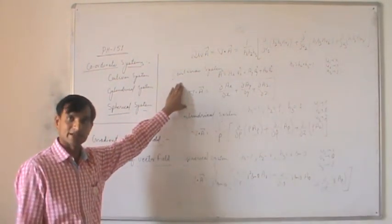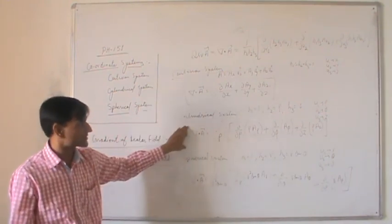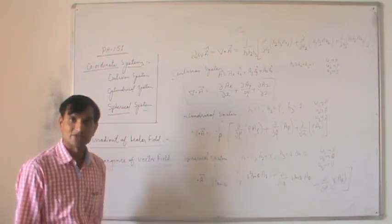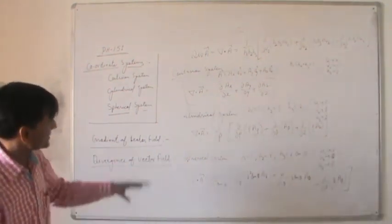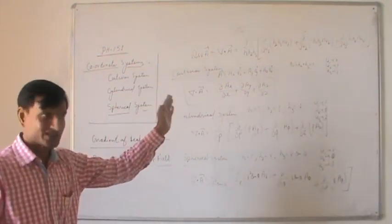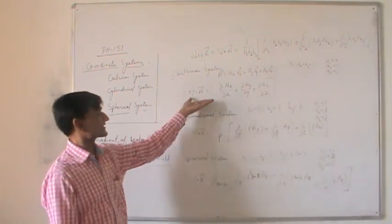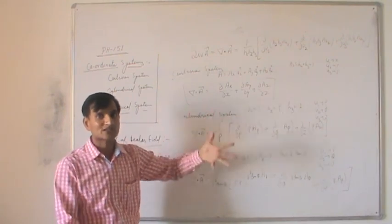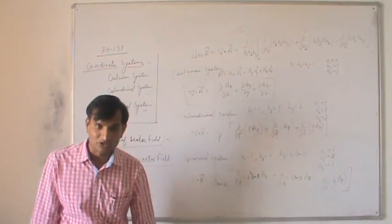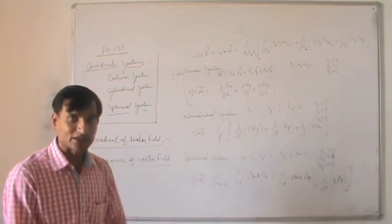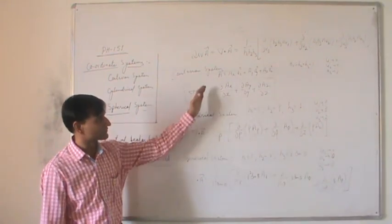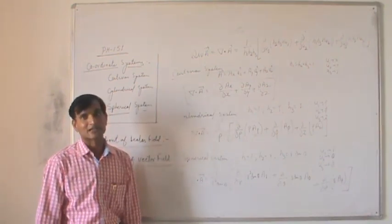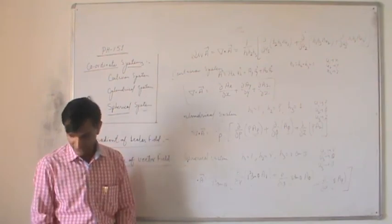If the vector is defined in x, y, z, use the Cartesian expression. If defined in rho, phi, z, use the cylindrical expression. If defined in the spherical system, use the spherical expression. Next, we will discuss the physical significance of divergence and then move on to the curl of a vector field and its calculation in various coordinate systems. Thank you very much.